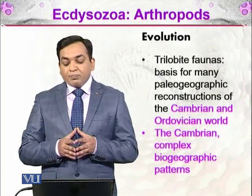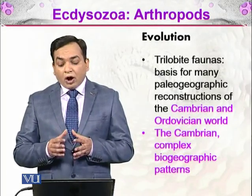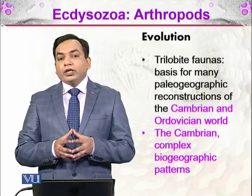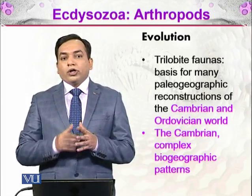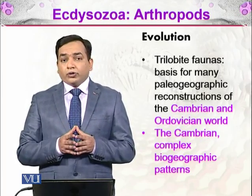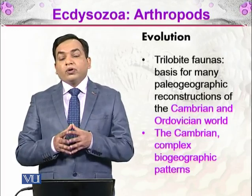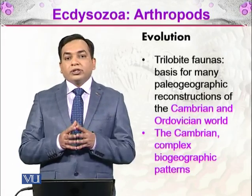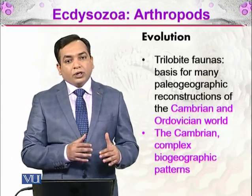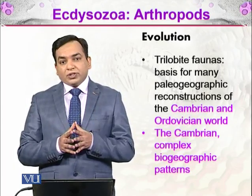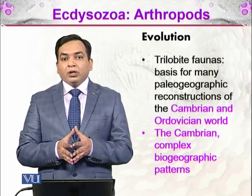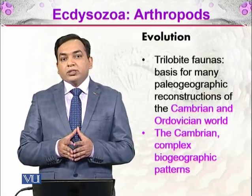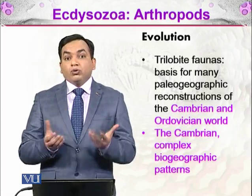Trilobite faunas are the basis for many paleogeographic reconstructions of the Cambrian and Ordovician world. As arthropods, trilobites underwent molting or ecdysis. When an organism loses its external skeleton, that skeleton becomes part of the environment and can be preserved as a fossil. This means we can have multiple fossil records for a single individual, giving these organisms a very good fossil record.